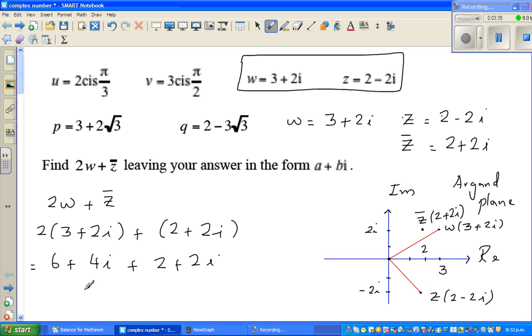So this is 2 times 3 is 6 plus 4i plus 2 plus 2i. Now after this, you can add the real part with the real part. So let me underline. So this is the real part and this is the real part. And you can add only the imaginary part with the imaginary part. So getting back to, this is writing in 6 plus 2 are the real parts. So the final answer is 8 plus 6i.